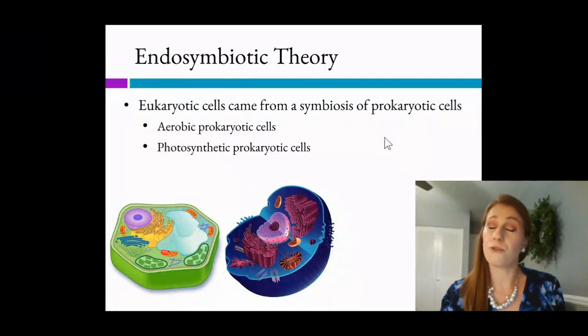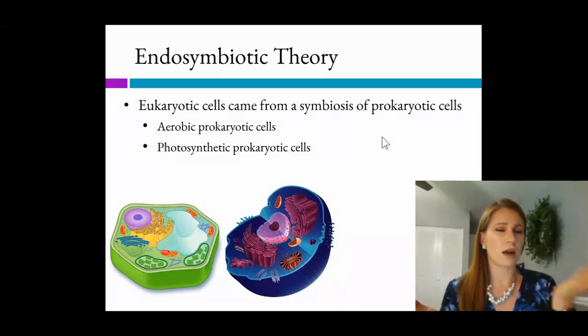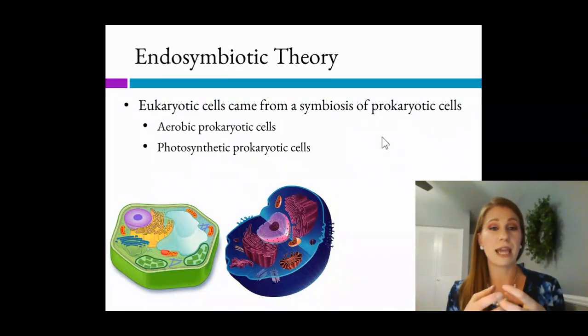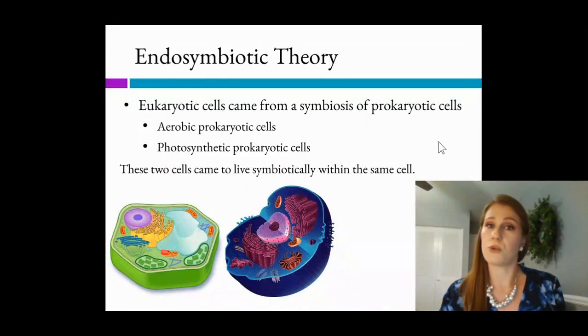And the second, called photosynthetic prokaryotic cells, was thought to use light to make energy. So we have these two different power sources, oxygen and light. And they came together, and the theory is that they came to live symbiotically in the same cell, which we now refer to as a eukaryote.